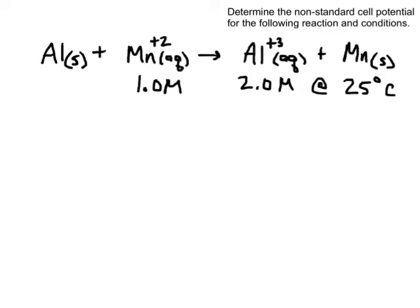Hello everybody, so here we are, we're going to do an example involving the Nernst equation. What we're going to do is determine the non-standard cell potential for the following reaction and conditions.